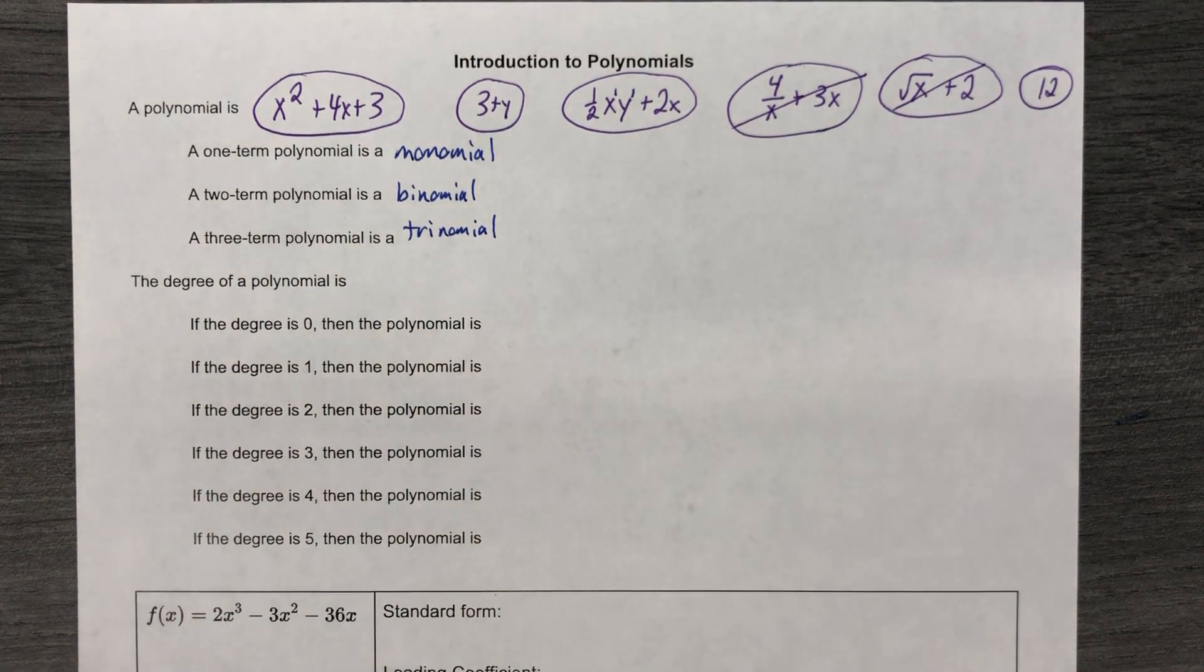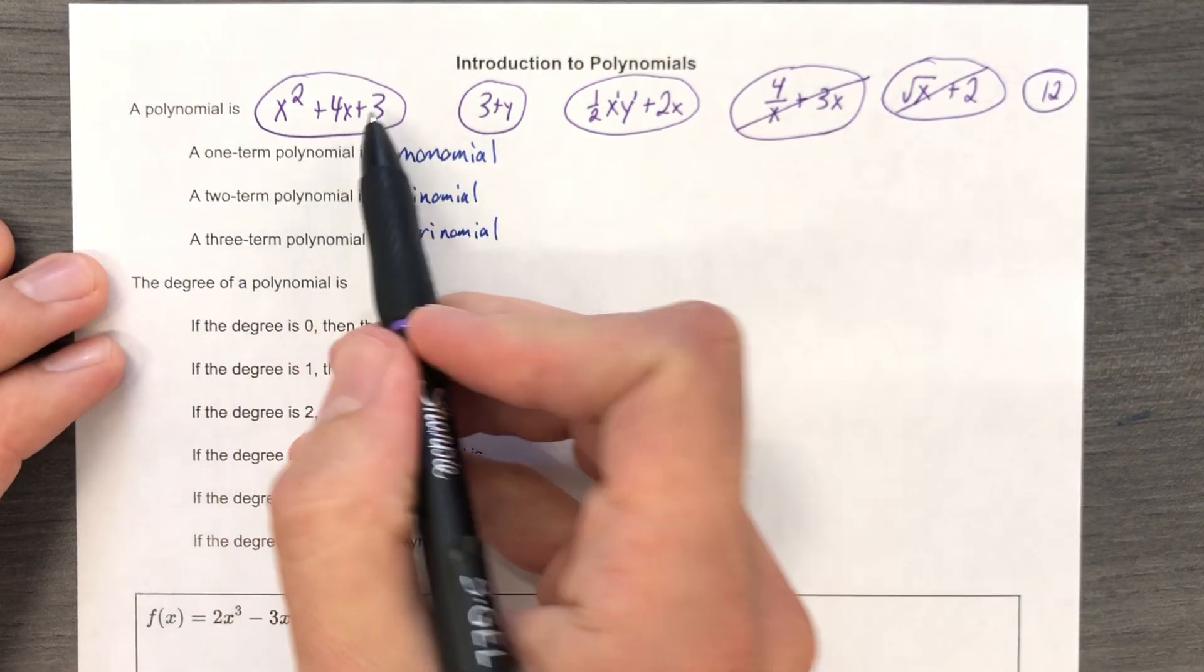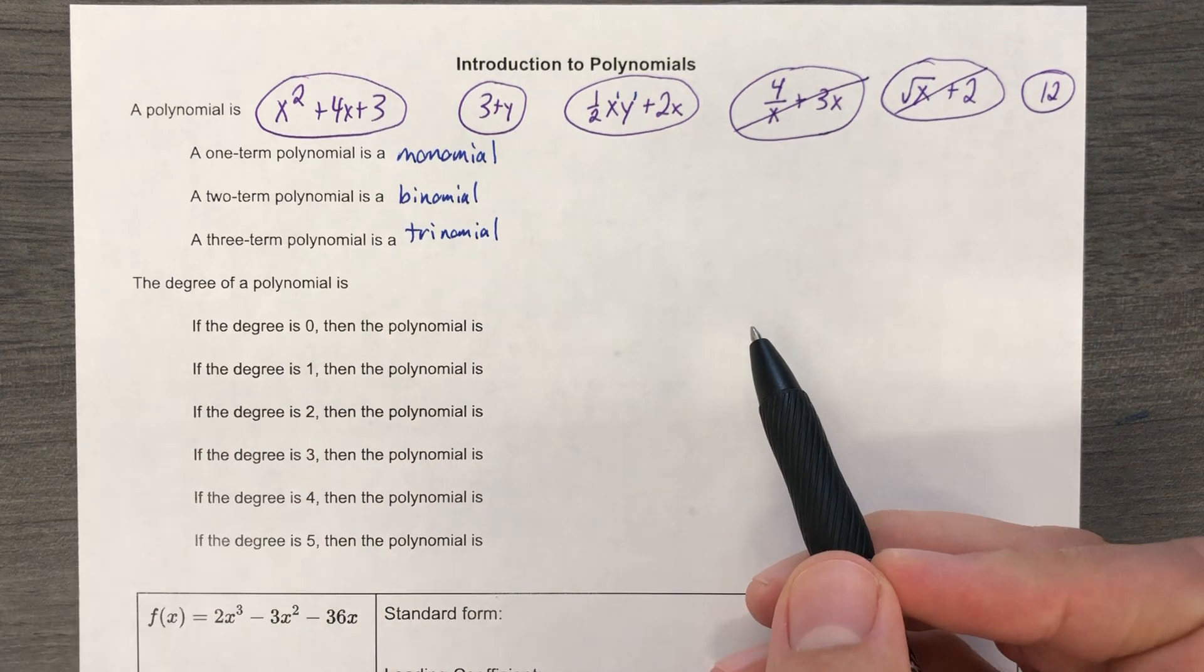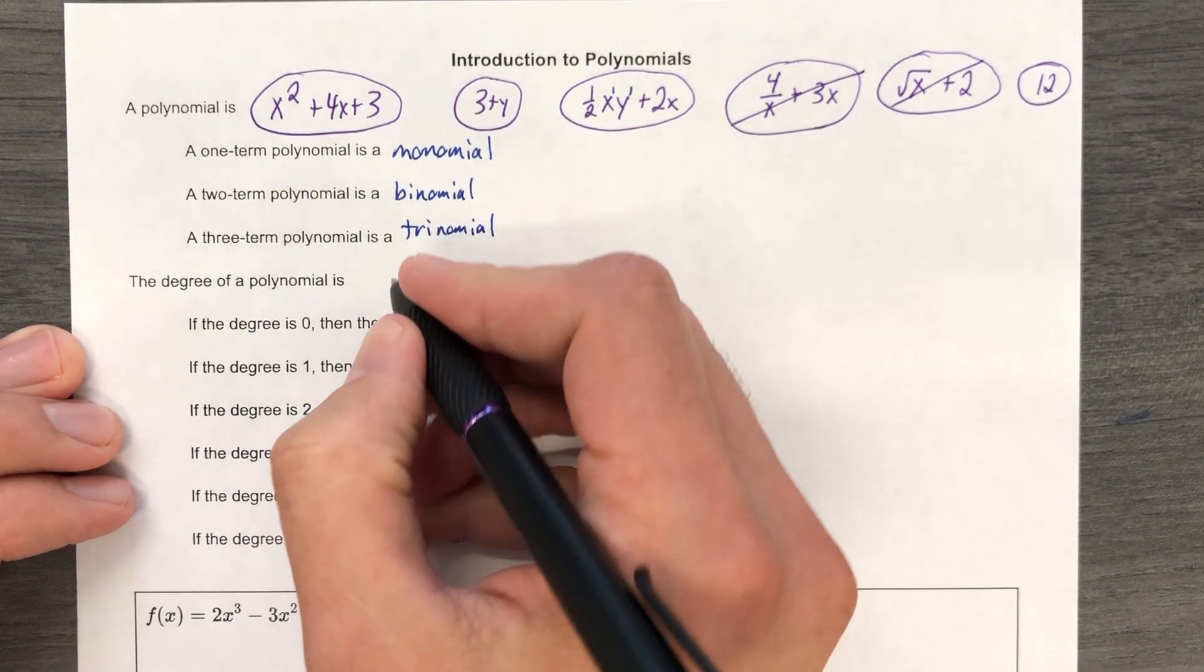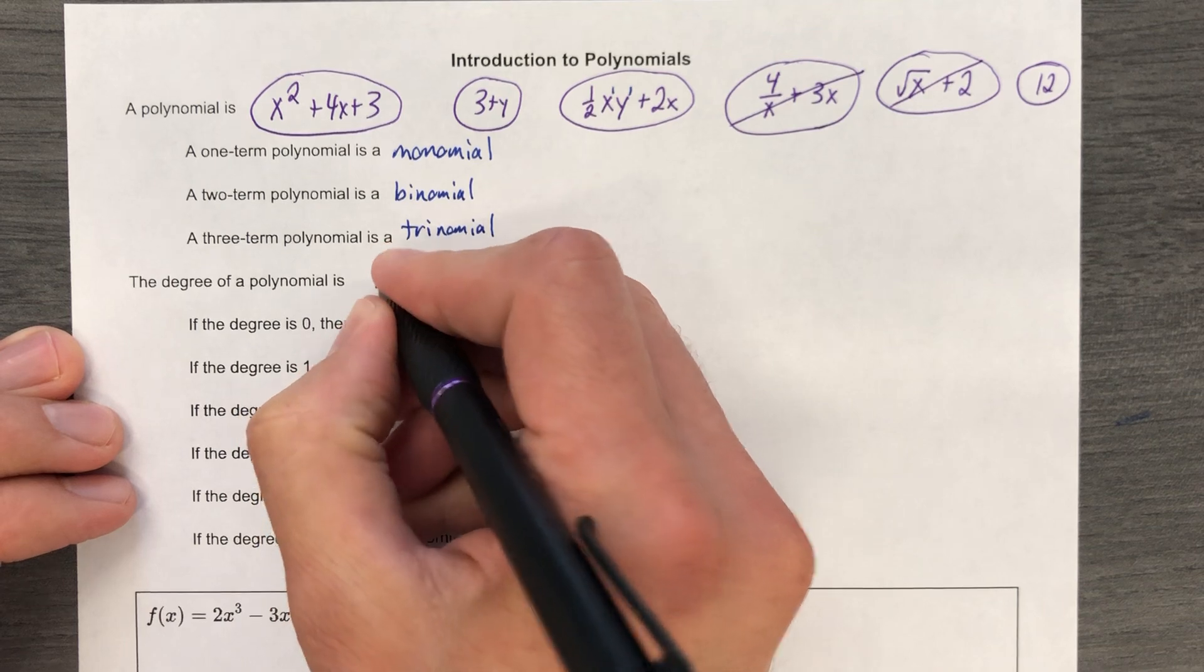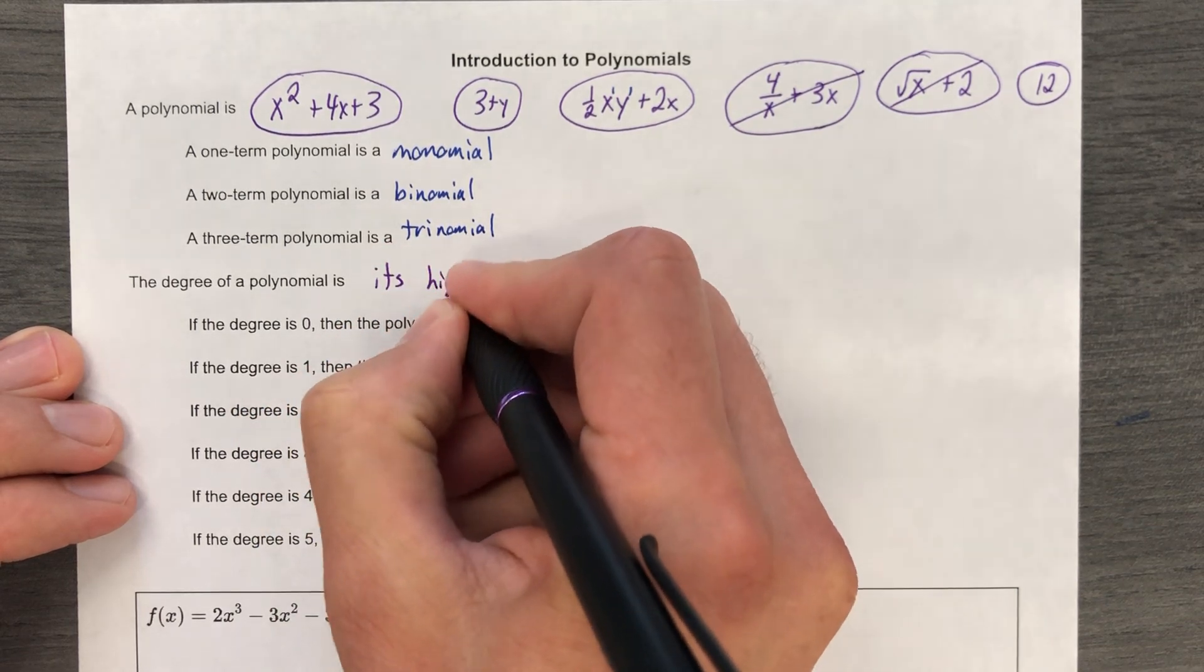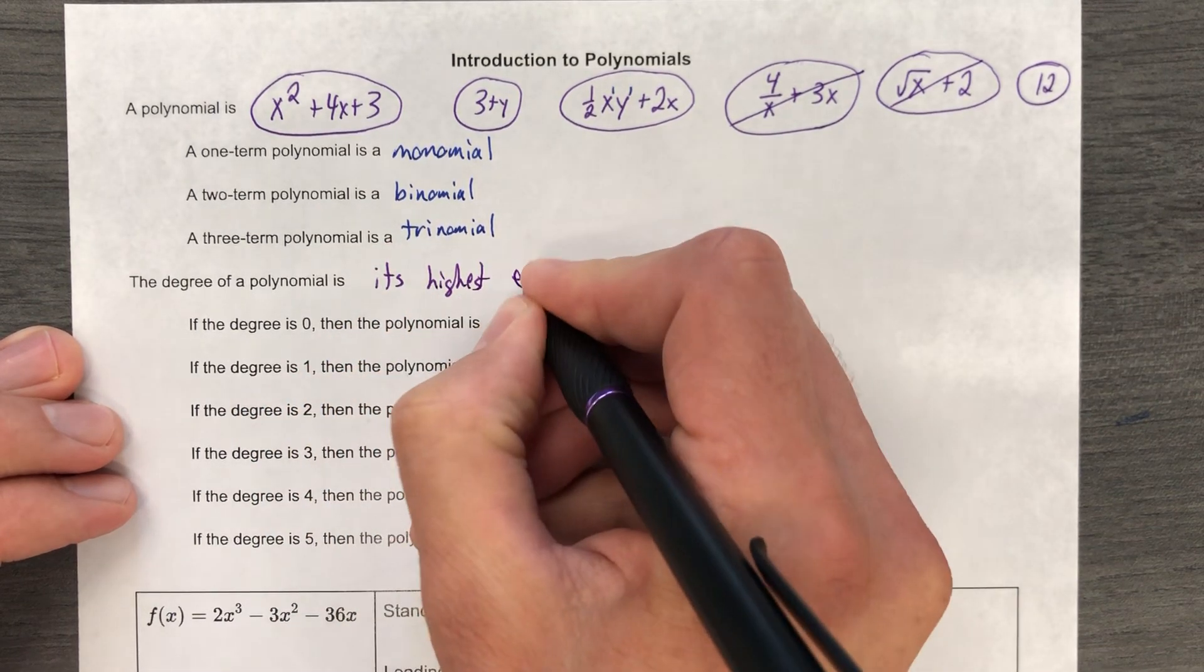But the way I'm going to word it is going to be not like that, because with the polynomials we're going to be dealing with, we're only going to be dealing with ones that have the same variable. So this definition will apply if we just have one variable, not two variables in the same polynomial. The degree of a polynomial is its highest exponent.